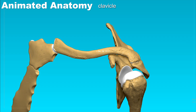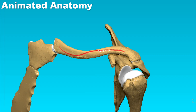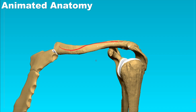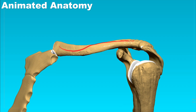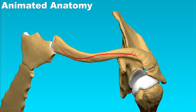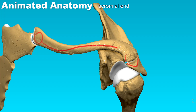The clavicle is an S-shaped long bone, and as you can see, it is horizontal — it is the only bone in your body that is actually horizontal. It has two ends: the sternal end, because it articulates with the sternum, and the acromial end, because it articulates with the acromion of the scapula.